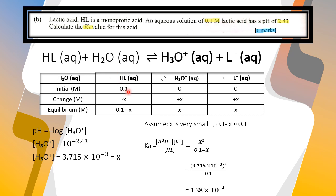We know that the concentration of lactic acid is 0.1, so initial is 0.1, 0, 0. Then change is negative x, positive x, positive x. And we get equilibrium of 0.1 minus x, x, and x.